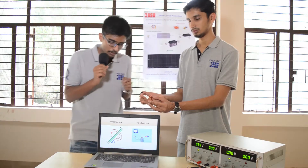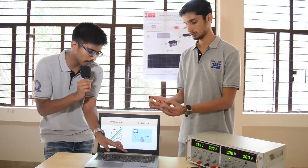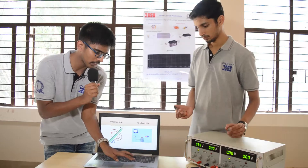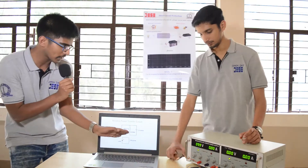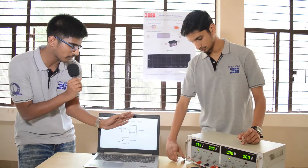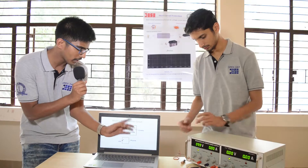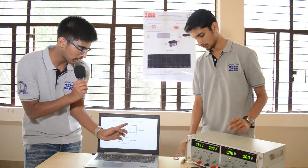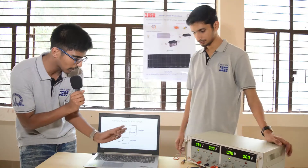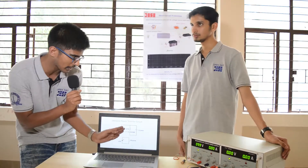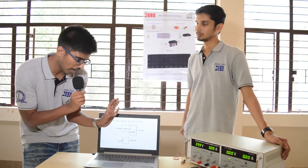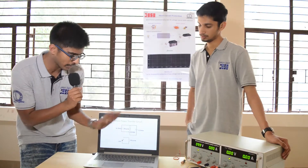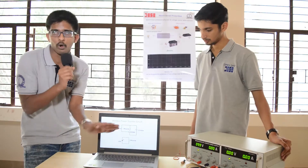Now I will show the circuit diagram. Basically what it has is one battery, one switching device which is a transistor, a primary coil, a secondary coil, and the load.